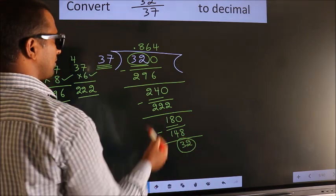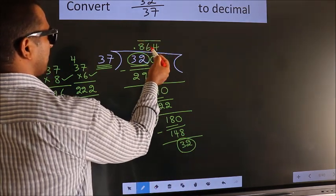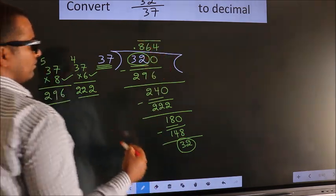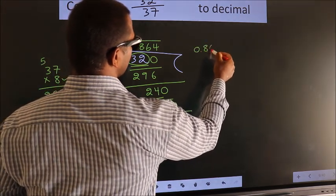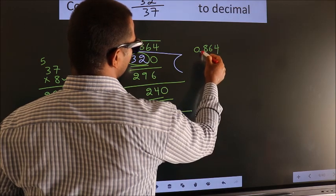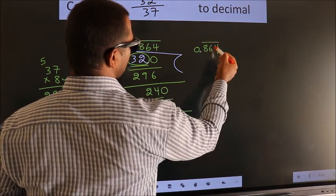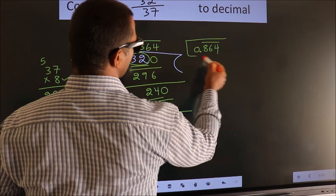That means we get bar on these 3 numbers. Therefore our answer is 0.864 with bar on these 3 numbers. This is our answer.